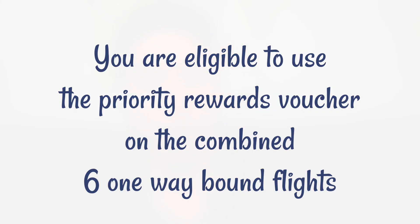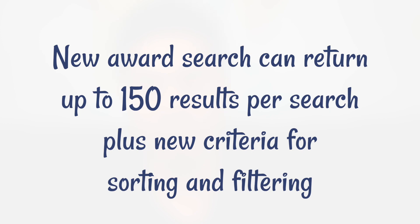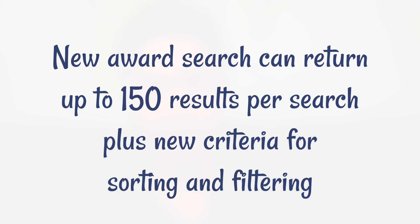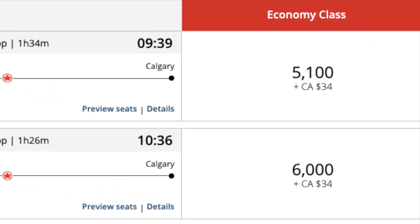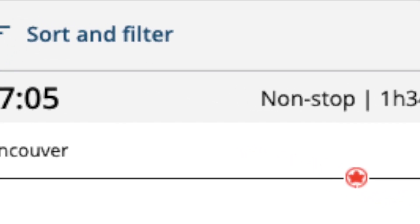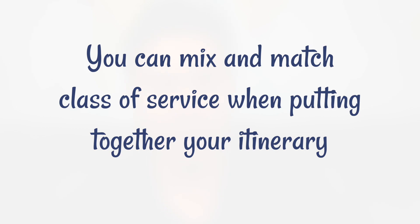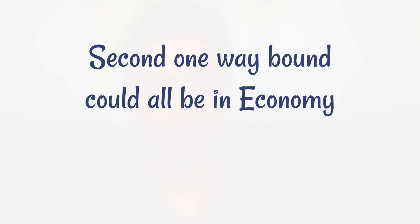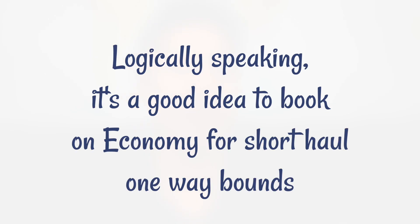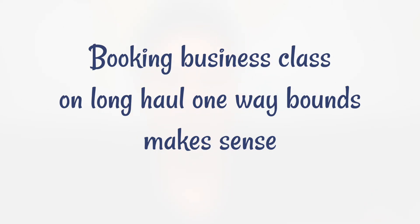You can use the priority reward voucher across your combined six one-way bound flights. The new award search returns up to 150 results per search, with new sorting and filtering options on the top left corner of the Aeroplan website. You can also mix and match class of service within your itinerary — for example, business class on a long-haul flight and economy on a short-haul flight.